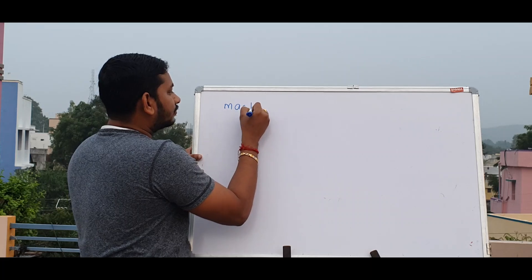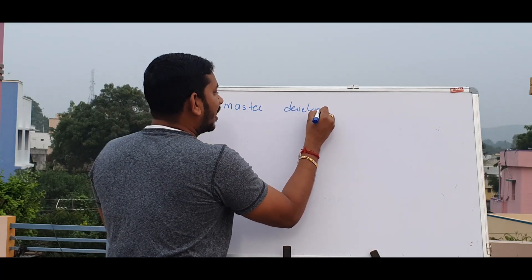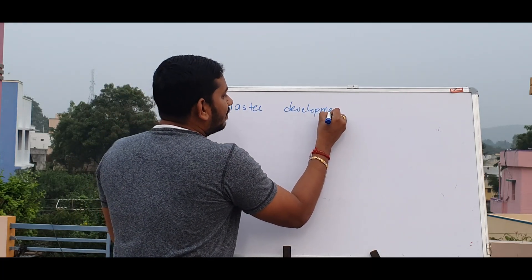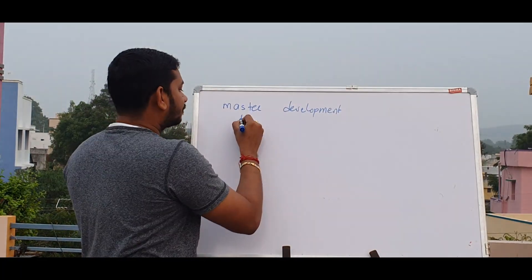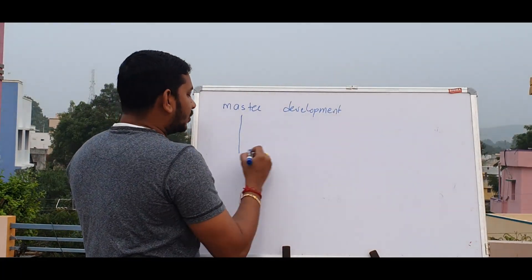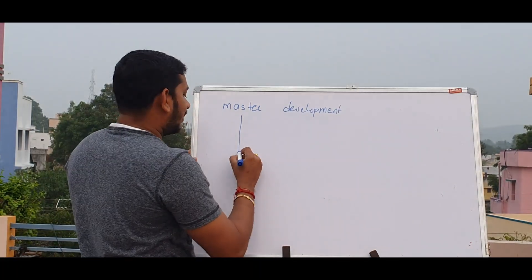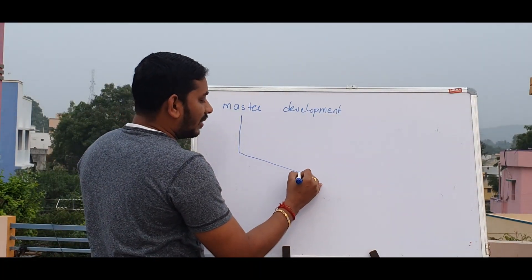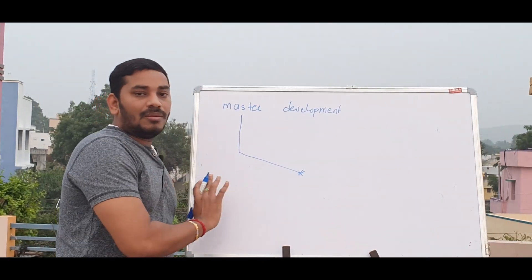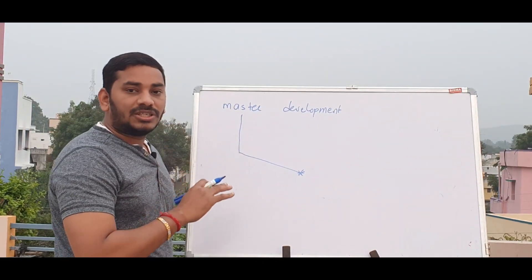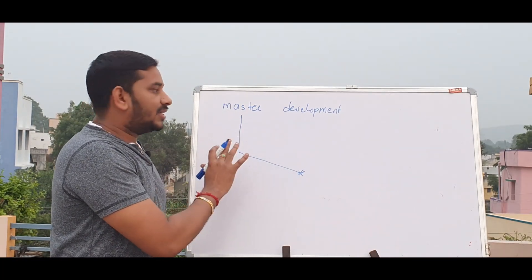The Master branch and Development branch are the main branches. At the start of the project, managers or leads will do direct commits. But once the project is running, everybody will do commits through the proper process.